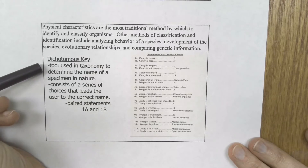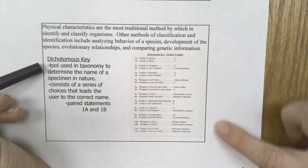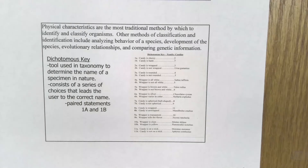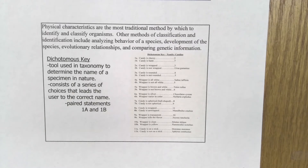A dichotomous key is a tool used in taxonomy — we've got an example on the right — to determine the name of a specimen in nature. For example, you might go out into the forest to identify trees, not knowing for sure which species is A versus B versus C, but with a key you would look at the bark, the leaves, the venation on the leaves, and try to identify the specific name of each trait.